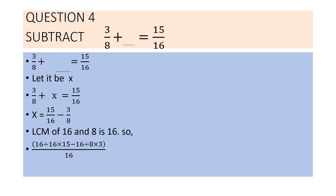Question 4: 3 by 8 plus blank equals 15 by 16. We need to find what fraction goes in the blank space. Let the fraction be x. The equation formed is: 3 by 8 plus x equals 15 by 16. Taking the variable to one side and constants to the other, x equals 15 by 16 minus 3 by 8.